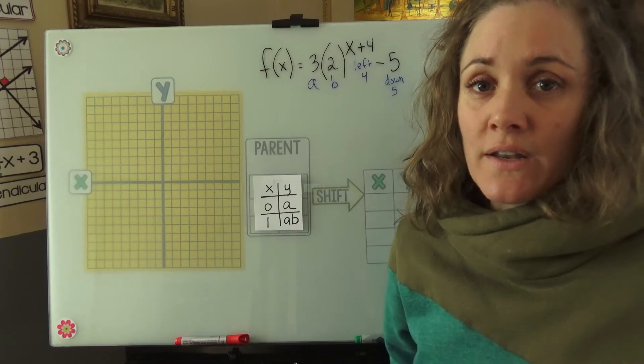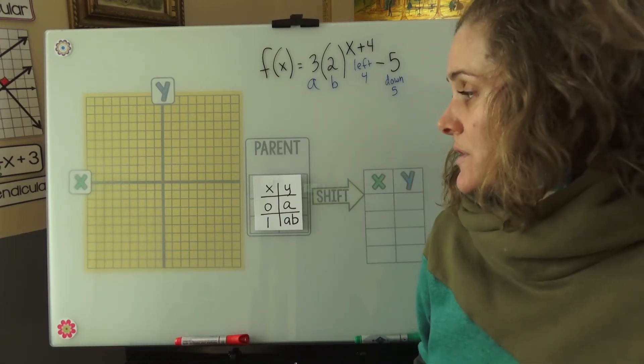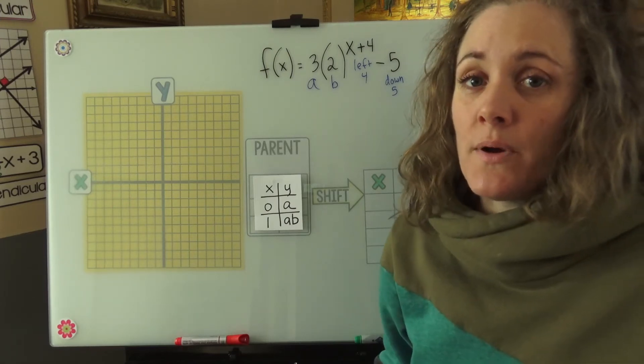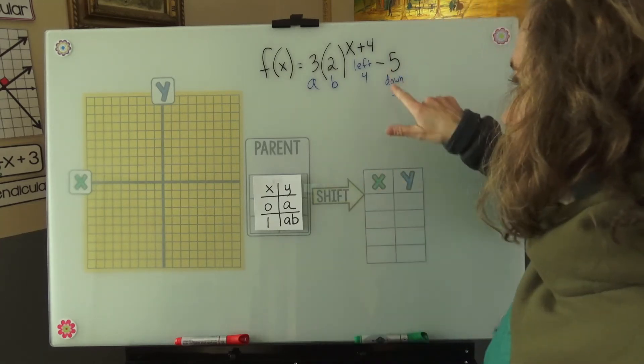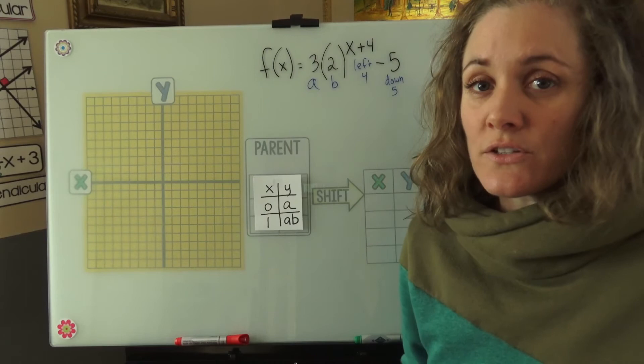Before we even get into creating a parent table for this function, we know one really important part about the graph is its horizontal asymptote. That comes from this down 5. So let's sketch that in.